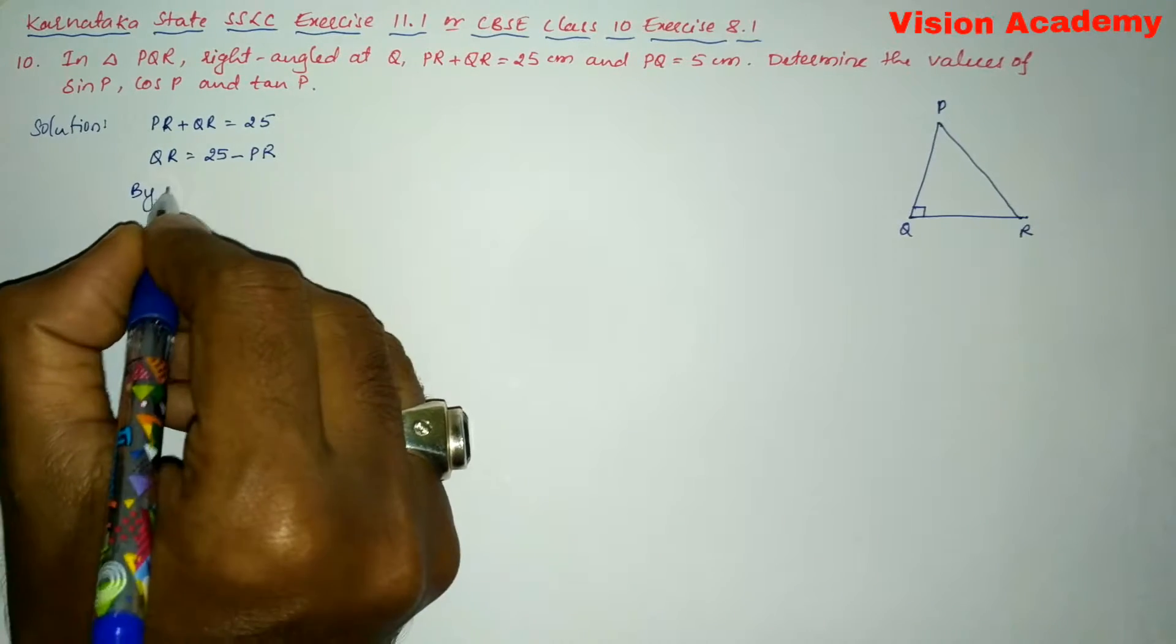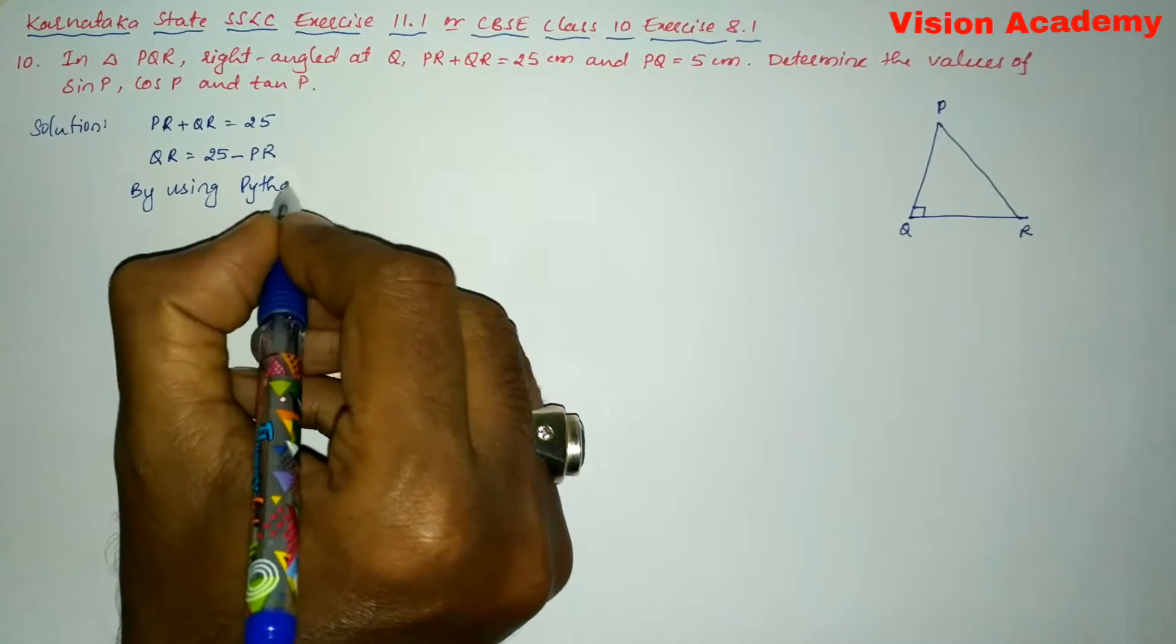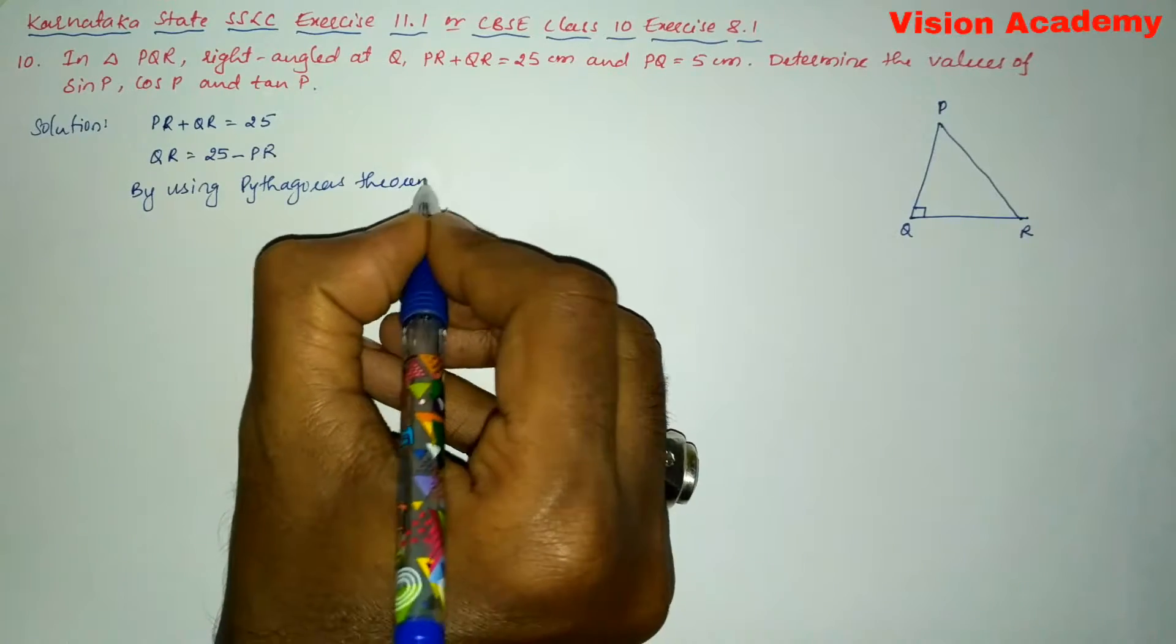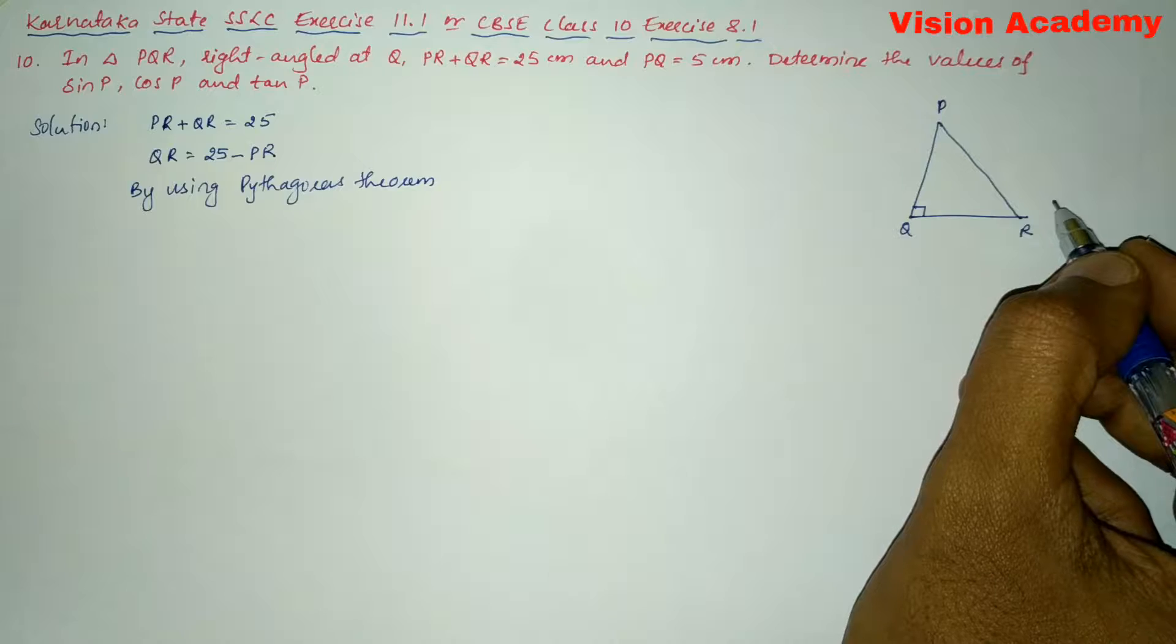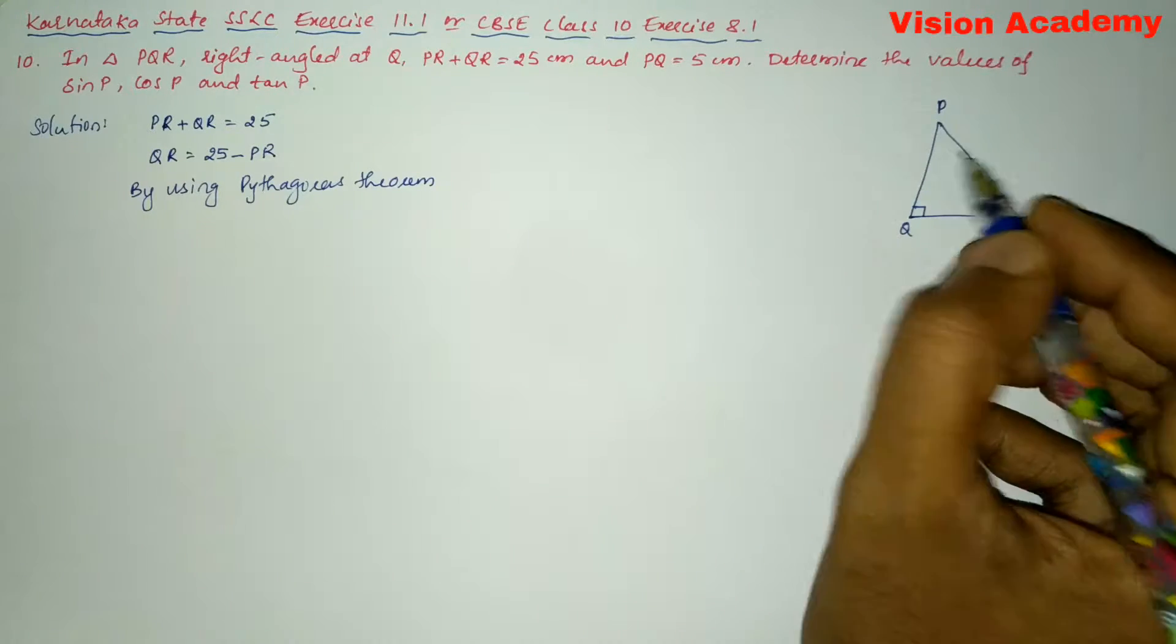Now, by using Pythagoras theorem, we get here hypotenuse square is equal to the sum of squares of the other two sides of the right angled triangle.